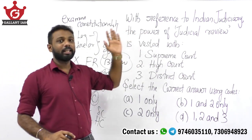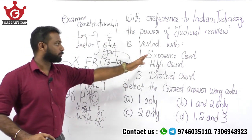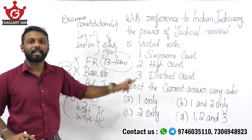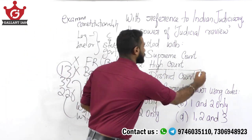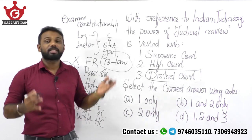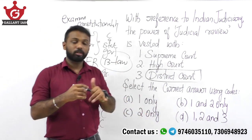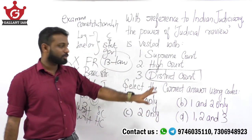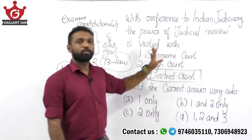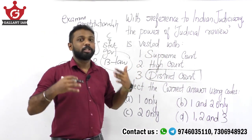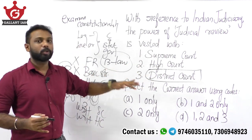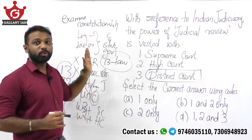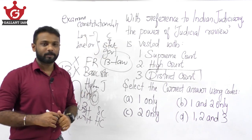Coming back to the question — with reference to the Indian judiciary, the power of judicial review is vested with Supreme Court, High Court, or District Court? We learned that this power is vested only with the Supreme Court and High Court. District courts and any subordinate courts have no power of judicial review. So our answer is Option B — that is, (1) and (2) only — meaning only the Supreme Court and High Court can examine the constitutionality of legislative enactments and executive orders of both central and state governments.